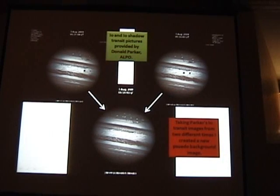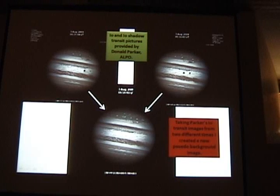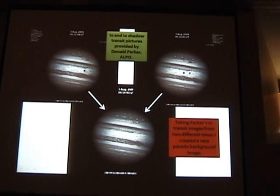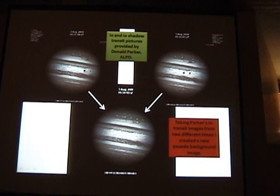So how else can we find Io's atmosphere? Don Parker donated to this project. I requested Io transit pictures in an effort to see if I could measure any intensity changes surrounding Io on Jupiter's face as Io passed in front of it. If there is a measurable or extinct atmosphere around Io, I should find it not only around Io, but around the shadow it projects too.